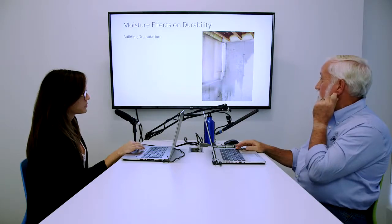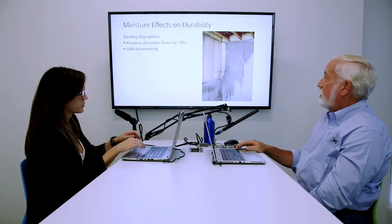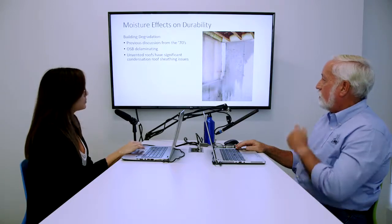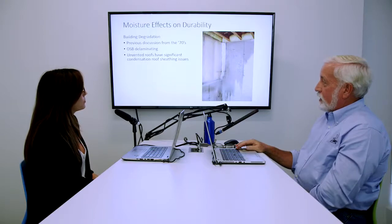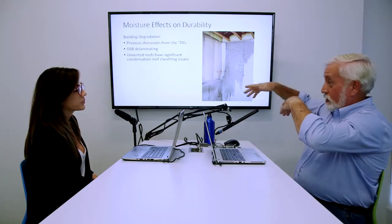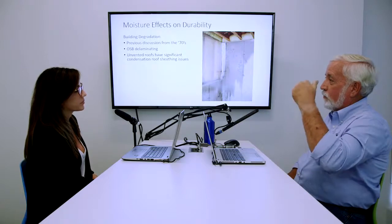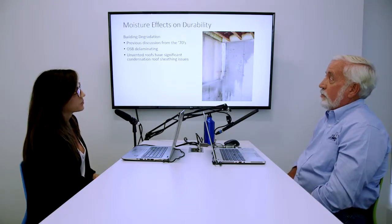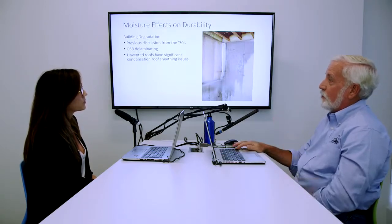In the 70s when we messed up and required all those vapor barriers, we talked about how OSB delaminates when it gets wet. The building code has addressed where we have those roof systems and moisture comes up by heat rising on the underside of that roof deck. In certain climate zones, you have to use a spray foam or insulation on top of the roof deck, otherwise you're going to have a durability issue with your roof.